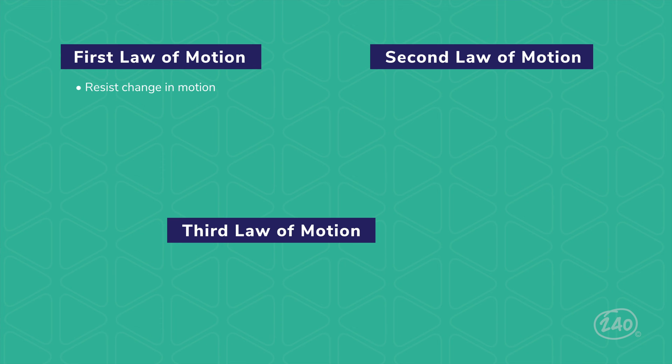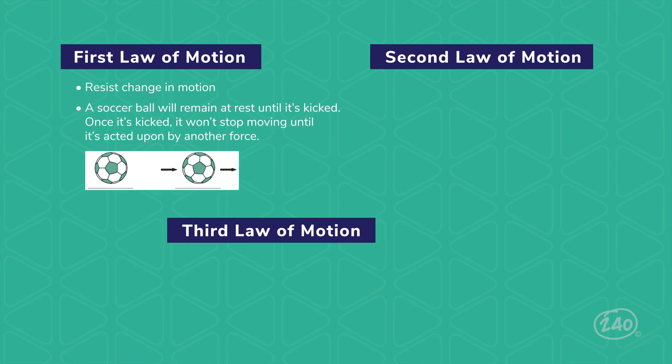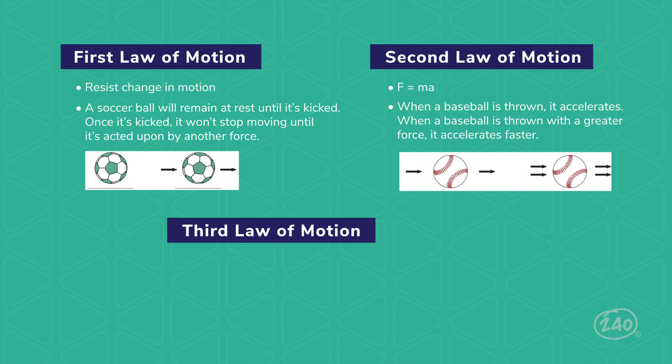The first law of motion says that objects resist change in motion. Think about a soccer ball. It will stay still until it's kicked. Once it's kicked, it won't stop moving until another force stops it. If a person doesn't stop it, gravity and friction will. The second law of motion is best described by the formula force equals mass times acceleration. So when the force increases, the acceleration increases. If you think about throwing a baseball, it accelerates when it leaves your hand. If you throw it harder, it will accelerate faster.